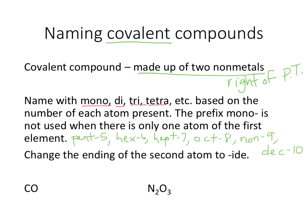We're naming these based on the number of each atom present. The prefix mono for one is not used when there's only one atom of the first element — it only applies to the second element. We also change the ending of the second atom to -ide. So CO: that's one carbon, but we don't use mono with the first one, so it's just carbon. There's one oxygen, so we use mono for the second element and change the ending to -ide: monoxide.